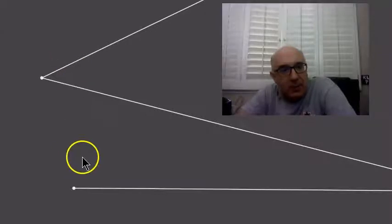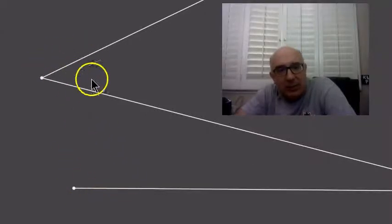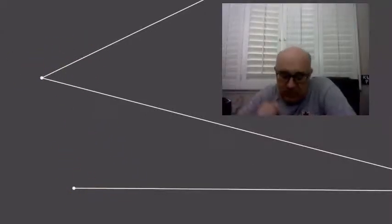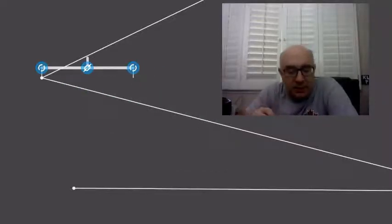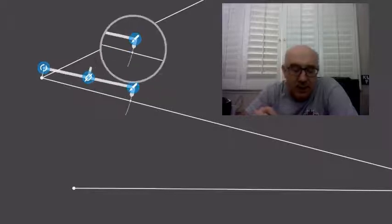So I've got the given angle here. I want to create one down here that's double that size. So I'm going to pull out my compass, and first I'm going to make an arc here.